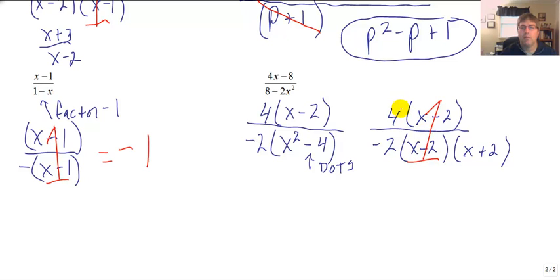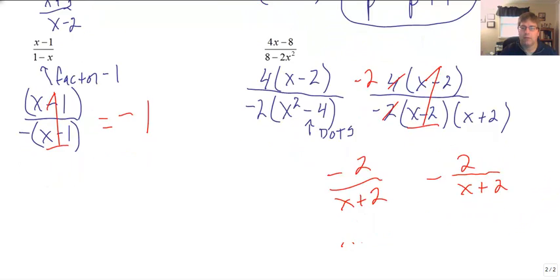So they cancel, applying our fundamental property. And 4 over negative 2 is negative 2. So our final answer here would be negative 2 all over x plus 2. You could write it the opposite of 2 over x plus 2 as well.